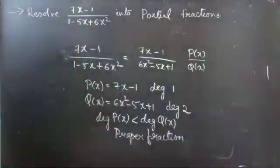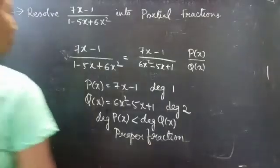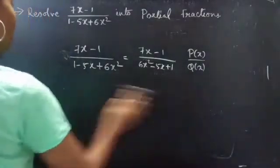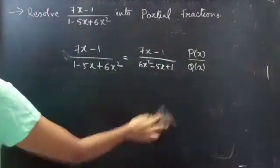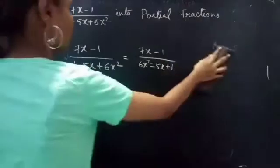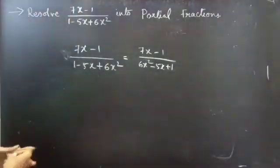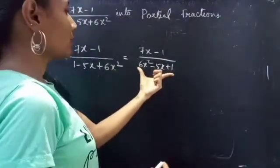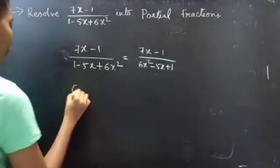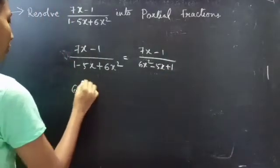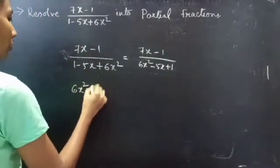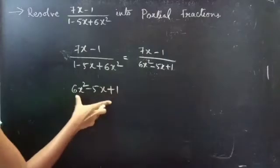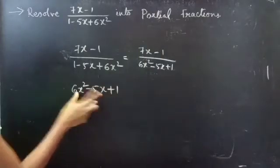Since the degree of P(x) is less than the degree of Q(x), we can say that the given fraction is a proper fraction. Now we will take this denominator and factorize the quadratic polynomial.